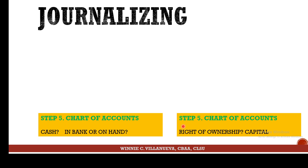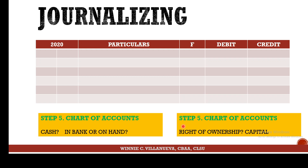The right of ownership is Capital. How do we make the entry? First, write the date — November 6. Then, what was received is debited: Cash in Bank. What was given up — the right of ownership — is credited as Mr. Wayne, Capital. Notice that the credit account is indented; credit accounts are always indented.